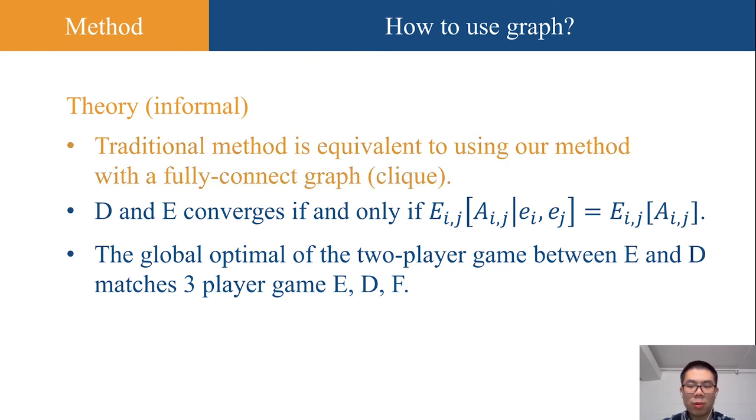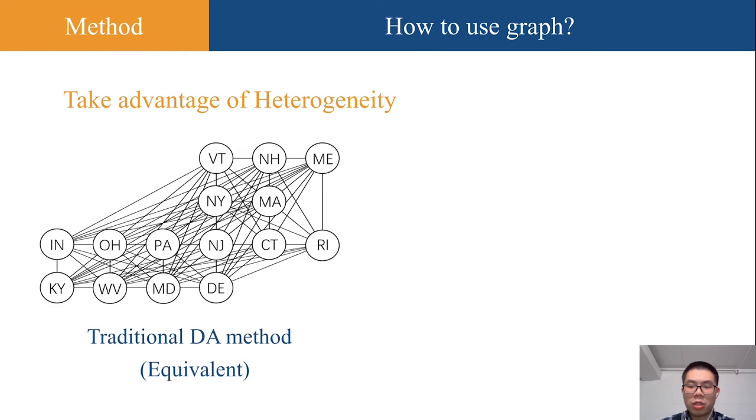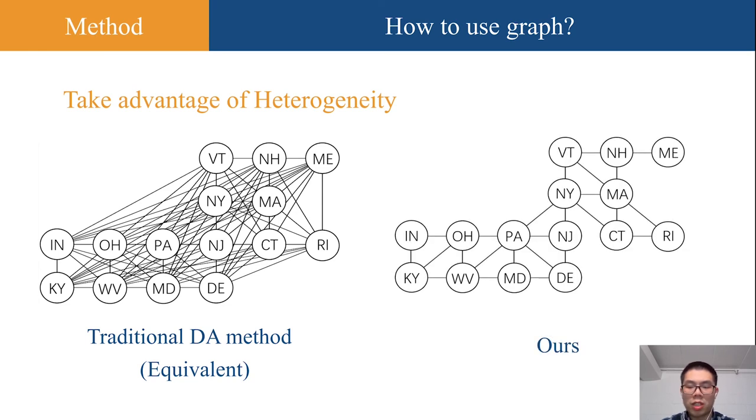The first property is very important because it illustrates that our model takes the advantage of heterogeneity. We still take the weather prediction as an example. Traditional method is equivalent to adapt across a fully-connected graph, while in our method, the domain graph is built on the geographic connection of each state. This makes our model much more powerful than other models.